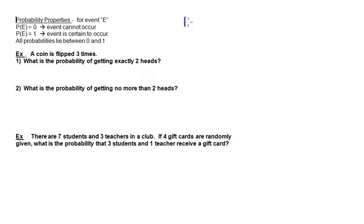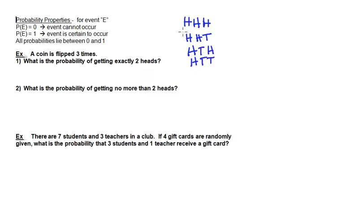Our possibilities for the first flip are: head, head, head; or head, then the next two flips being head and tail; or if our first flip was still a head, we might get tail and head; or a head and then two tails. These are the possible outcomes if the first flip is a head. Now if the first flip is a tail, the second and third flips can produce the same outcomes, so I'm just going to rewrite those outcomes for the second and third flips.